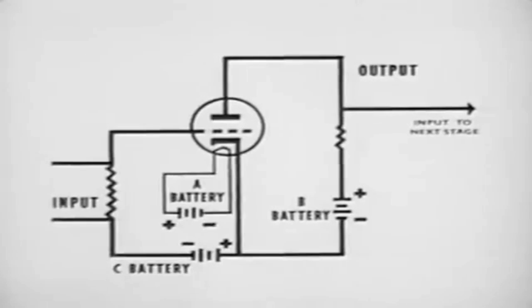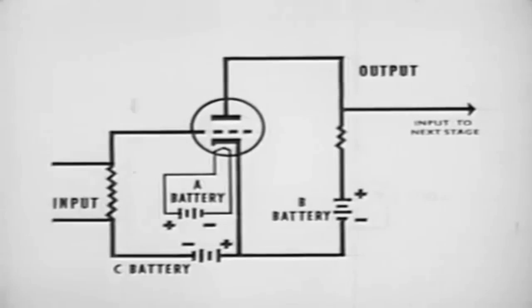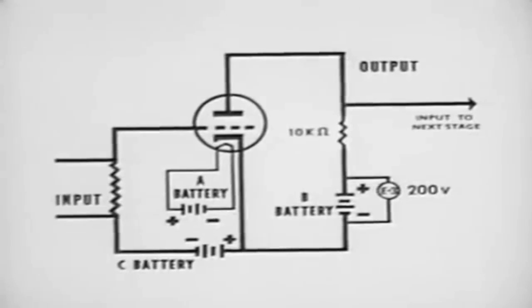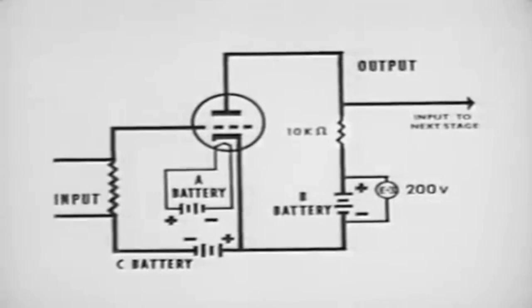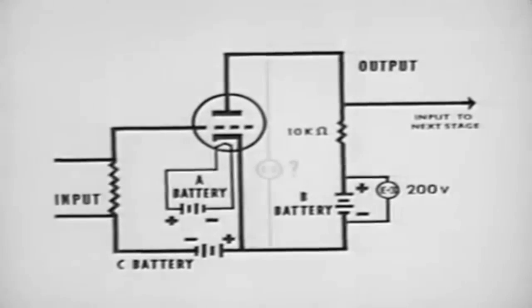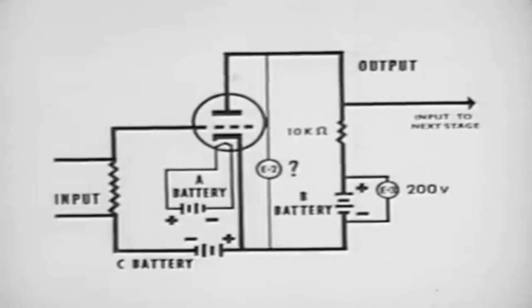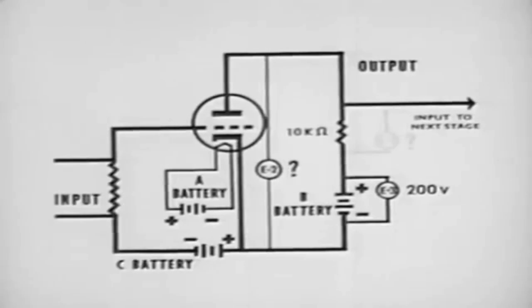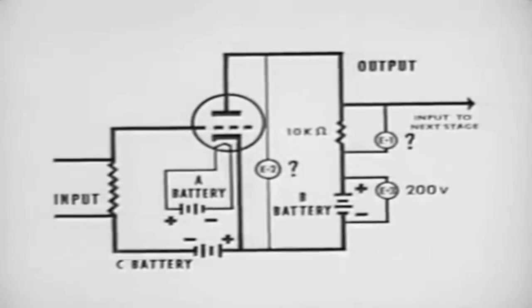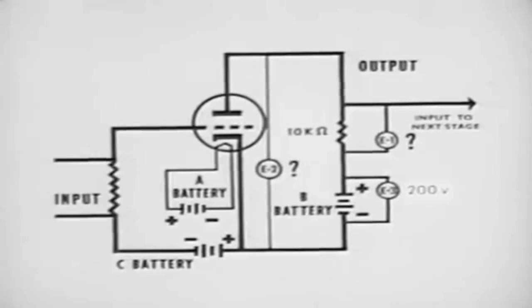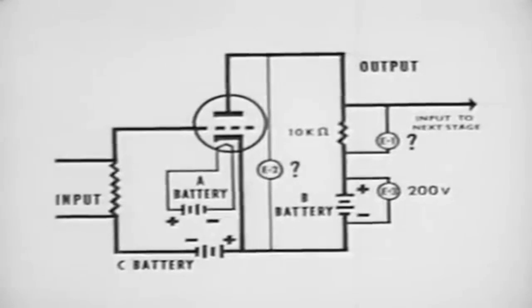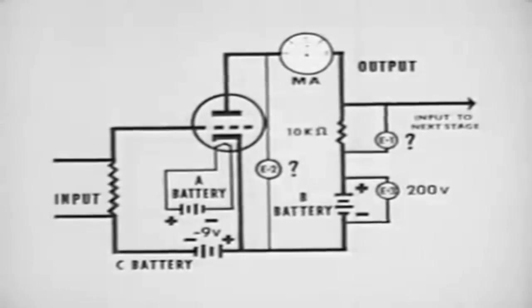Now suppose we place some values here. The B battery has a potential of 200 volts and the load resistor is 10,000 ohms. To compute E2, or the difference in potential between the plate and cathode, we must subtract E1, or the drop across the load resistor, from E3, or 200 volts. Therefore we must first compute E1. Let's say that the bias is minus 9 volts, resulting in a static plate current of 6 milliamperes.